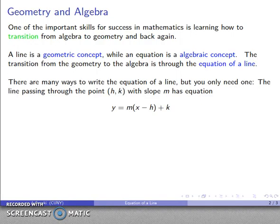So there's a number of ways of writing the equation of a line, but only one of them is really that important. The line passing through a point h, k with slope m has an equation given by this: y equals m times x minus h plus k.